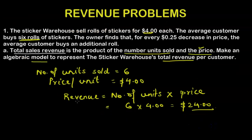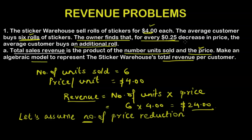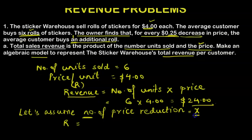This is the revenue when we use the given price and number of items. But the next part says the owner finds that for every 25 cents decrease in price, the average customer buys an additional roll. To create a new equation, since the owner doesn't know how many price reductions to make, let's assume x is the number of price reductions. With every 25 cents price reduction, the customer buys one additional roll. So we represent revenue as R including the number of price reductions.